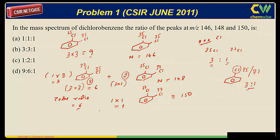So now the resultant ratio is 9 to 6 to 1. This 9 stands for 146, this 6 stands for 148, and 1 stands for 150. You see the option, this will be the correct answer. Very easy to answer these questions and one thing I will show just as support.